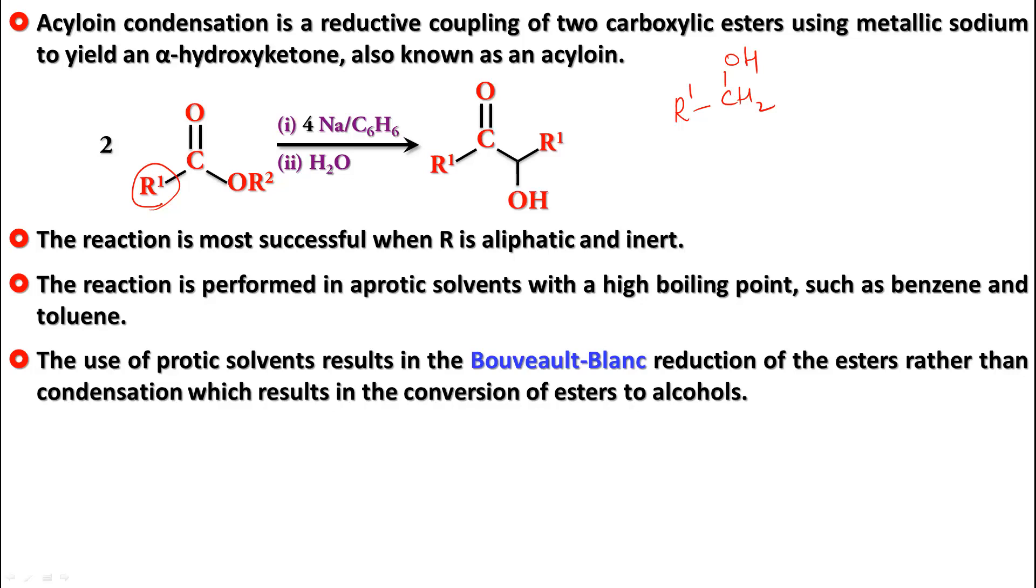So let's understand the mechanism. Sodium atom gets oxidized to yield sodium ion and electron. And as we can see from the ratio, we use four mole of sodium for every two mole of the ester. So just imagine that we're getting four sodium ions and four electrons from four sodium atoms.